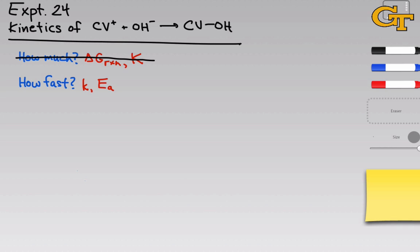Two key quantities are: little k, lowercase k, called the rate constant, and E_a — or delta G double dagger as you'll sometimes see it written — which is the activation energy, the energy required for reactants to get over a hump. We'll come back to these quantities later because measuring them is a huge part of this lab, but before we get into that, I want to begin with a simple question: what is reaction rate? How do we define reaction rate quantitatively?